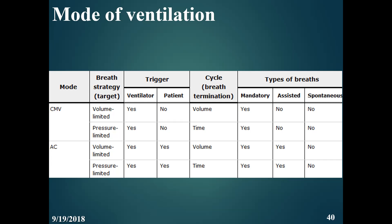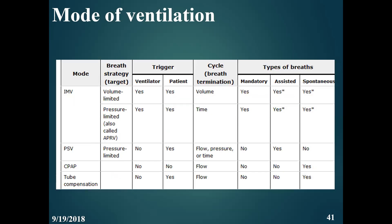The intermittent mandatory ventilation mode can also be volume limited or pressure limited. When it is pressure limited, it is also called APRV — Airway Pressure Release Ventilation. This is mainly an adult mode, but it's worth explaining in case you see it in adults. We rarely use it.